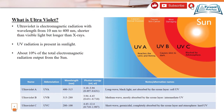First of all, you need to know what Ultraviolet basically is. Ultraviolet is an electromagnetic radiation which has a wavelength from 10 nanometers to 400 nanometers. It is shorter than visible light but longer in wavelength than X-rays. It is also present in sunlight, and whatever electromagnetic radiation comes from the sun, about 10% of it is in the form of ultraviolet.